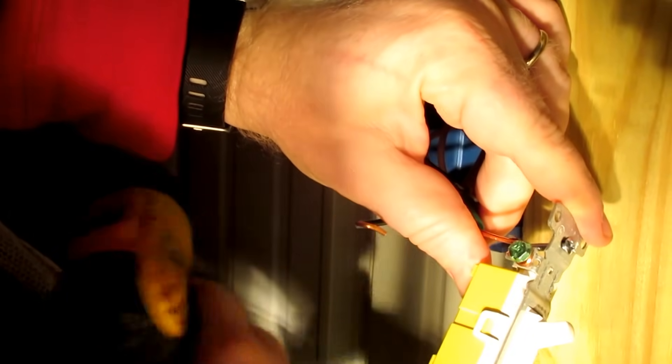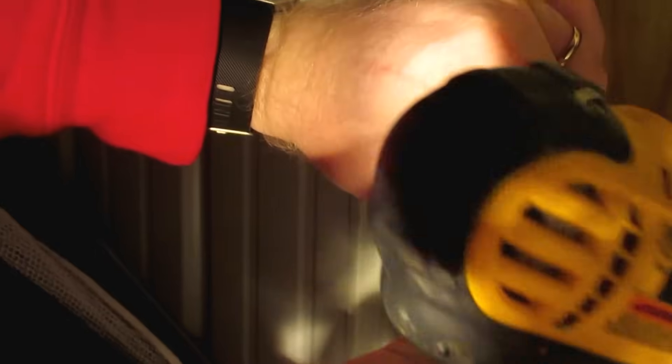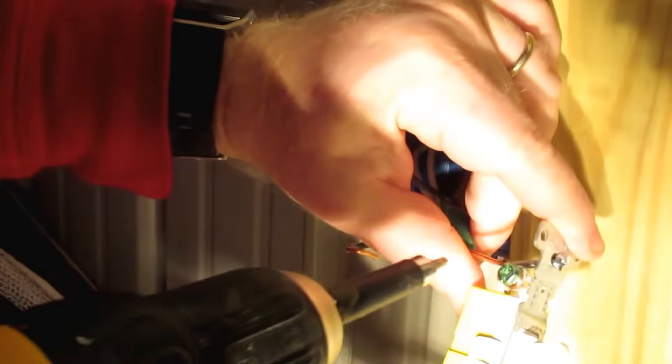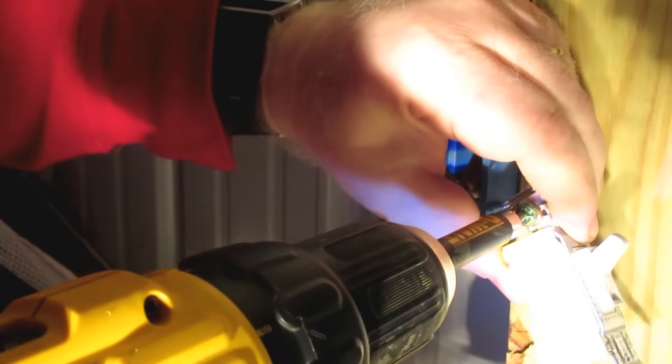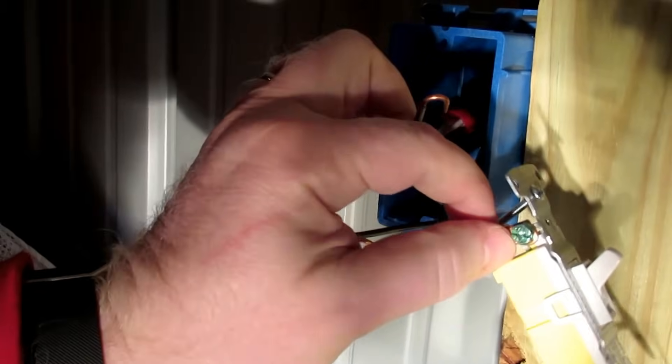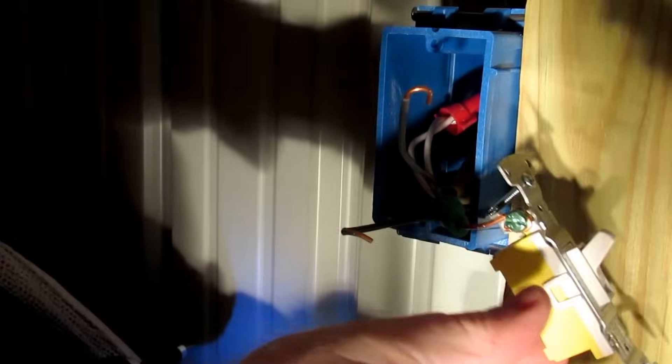Now I'm going to tighten it down, and for that I'm just using my drill and a square bit. This is just a DeWalt drill I've had for a while. It is a great drill. I will drop a link down in the description below for this. We're just going to snug this up. See how that wants to pull up? You want to make sure that all of that is connected just like that. Now we don't have to worry about that going anywhere, and we're ready to connect our two hots or our two blacks.